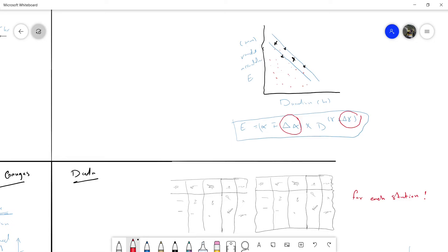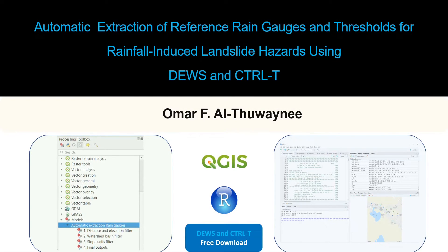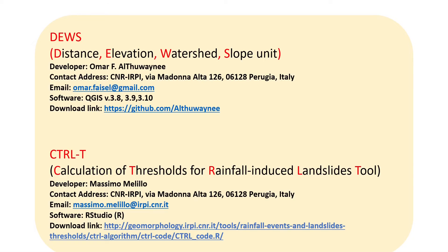After considering all of this, we can produce solutions using specific tools that can be automatically developed to cover all these problems. Here is Omar Al-Thuwaini saying Salam Alaikum and welcome to all of you. I am a professional in GIS and geomatics engineering. Today I will introduce a new course: the automatic extraction of the reference rain gauge and threshold for rainfall-induced landslides using two tools — DEUCE and CTRL tool — using real data consisting of landslide locations with dates of recurrence, rainfall rain gauges with hourly records, and a digital elevation model.